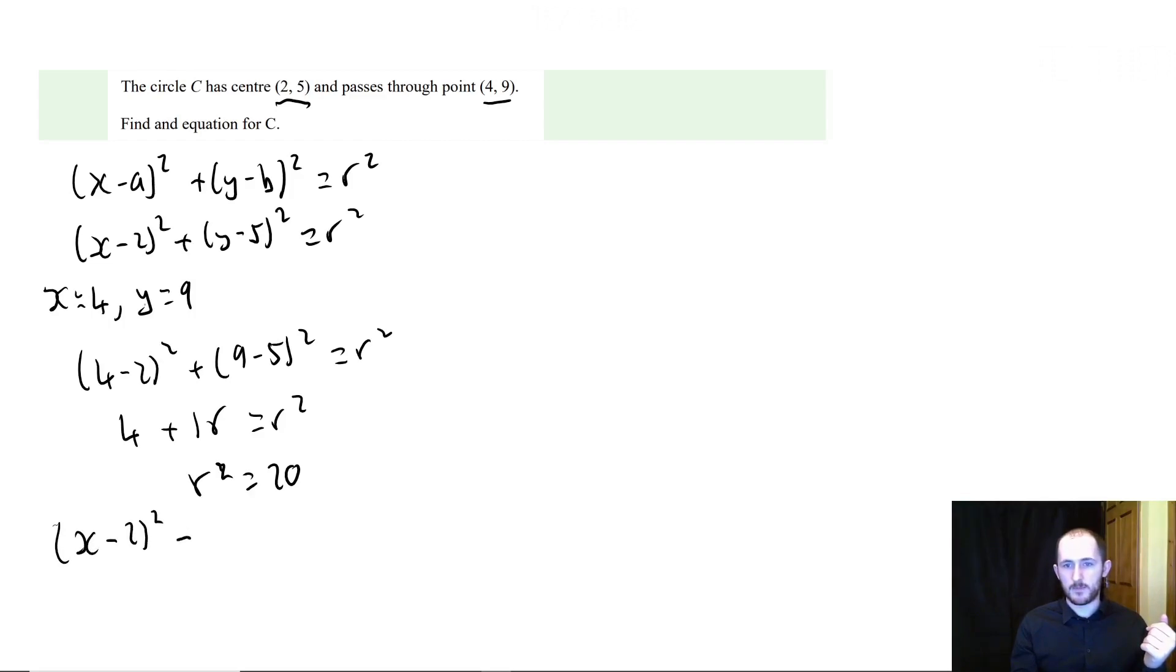So r squared equals 20. So here, some people might say that, okay, then r equals square root 20. It's actually not necessary because we're looking for r squared, not r. So you don't need to actually worry about that. So x minus 2 squared plus y minus 5 squared equals 20. So that's how you would do something along those lines.